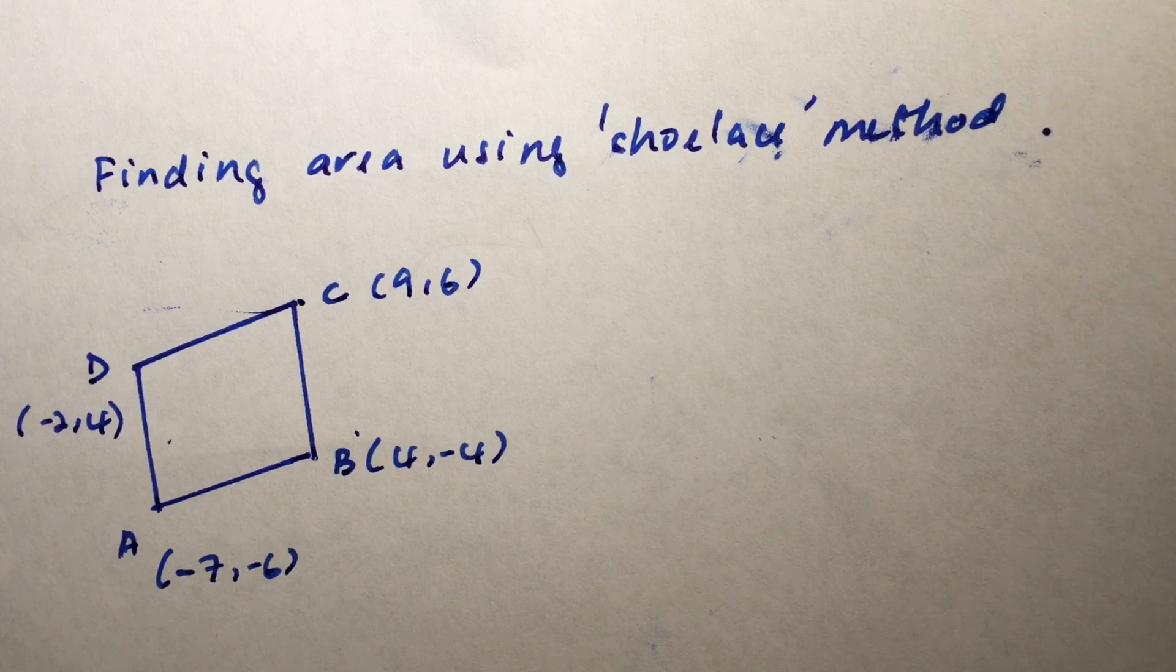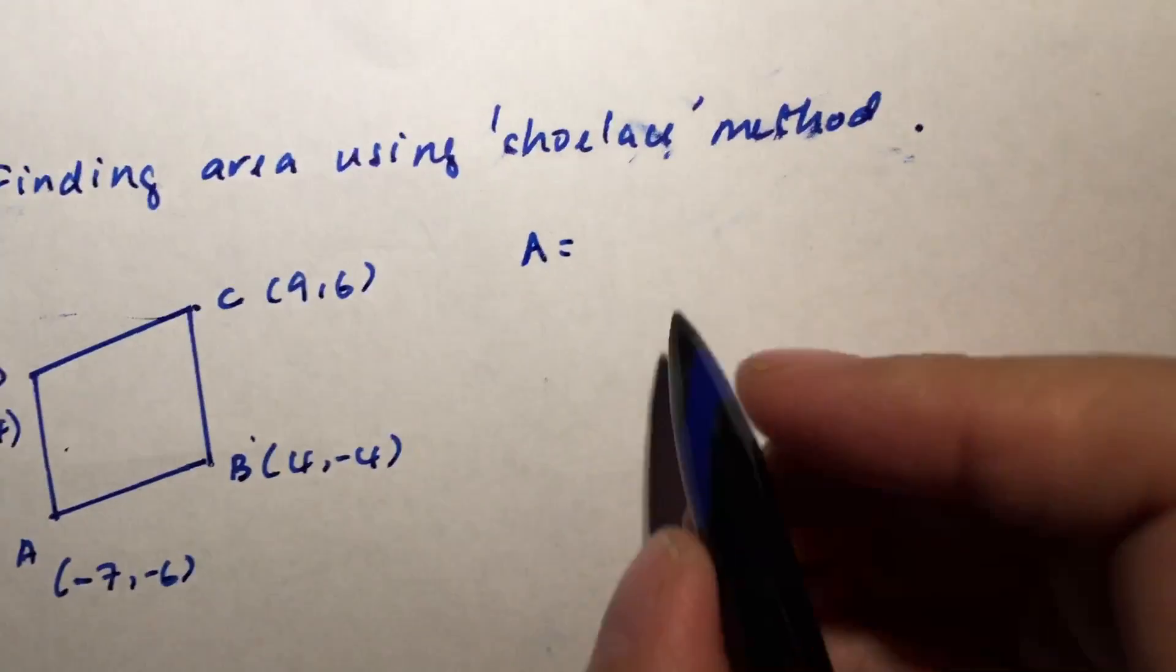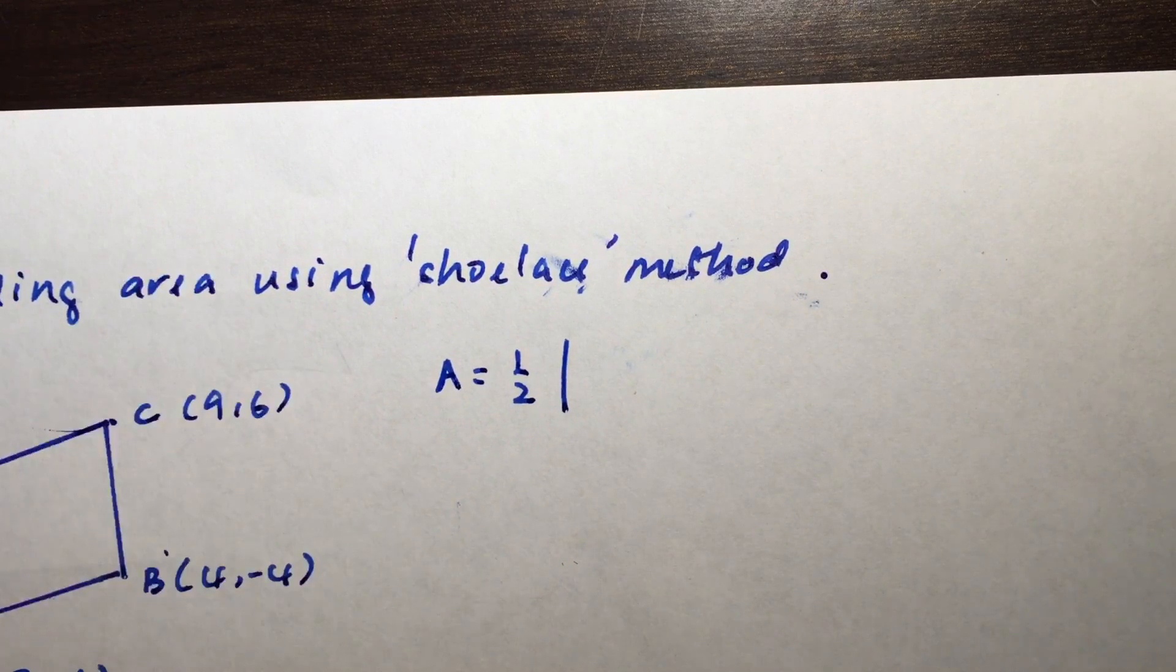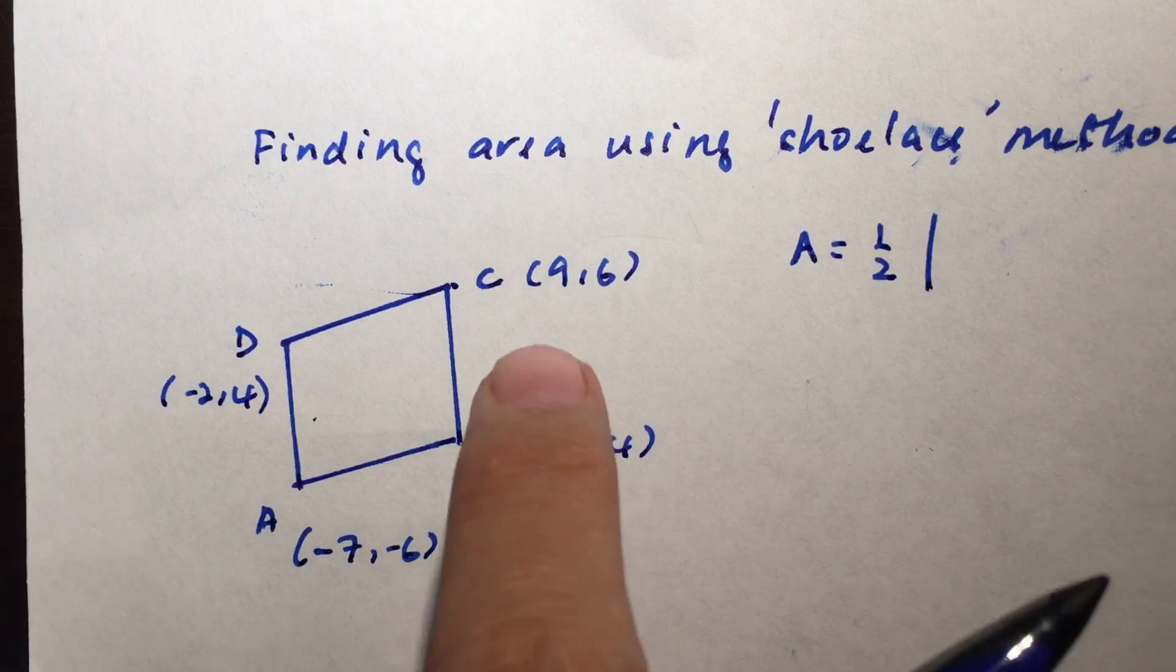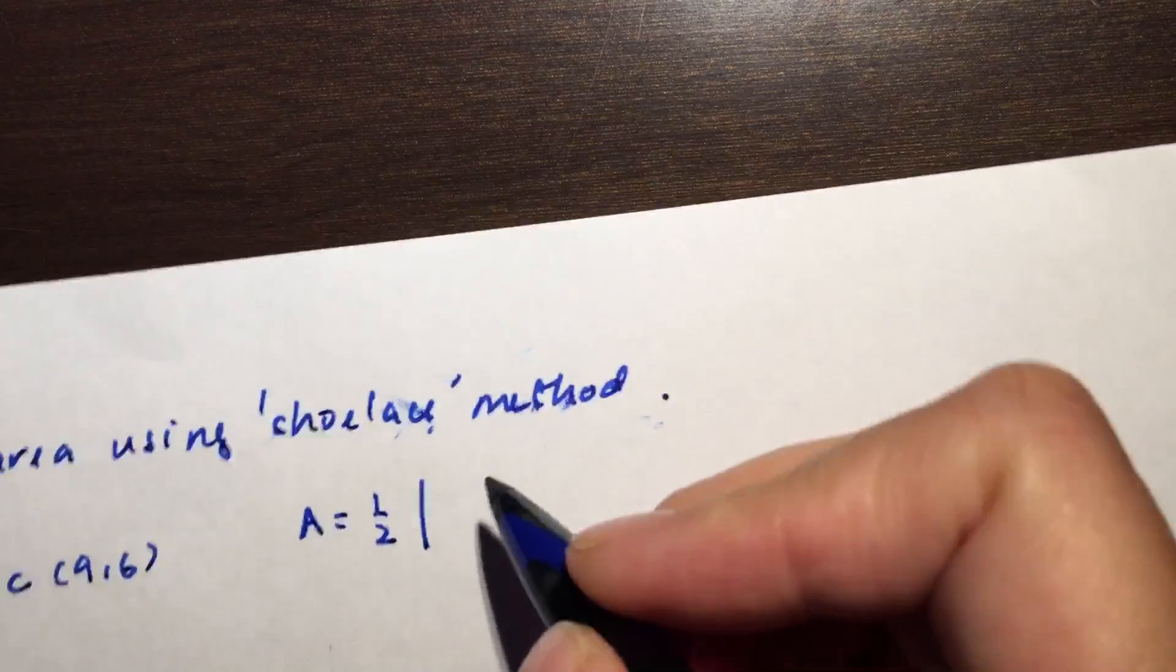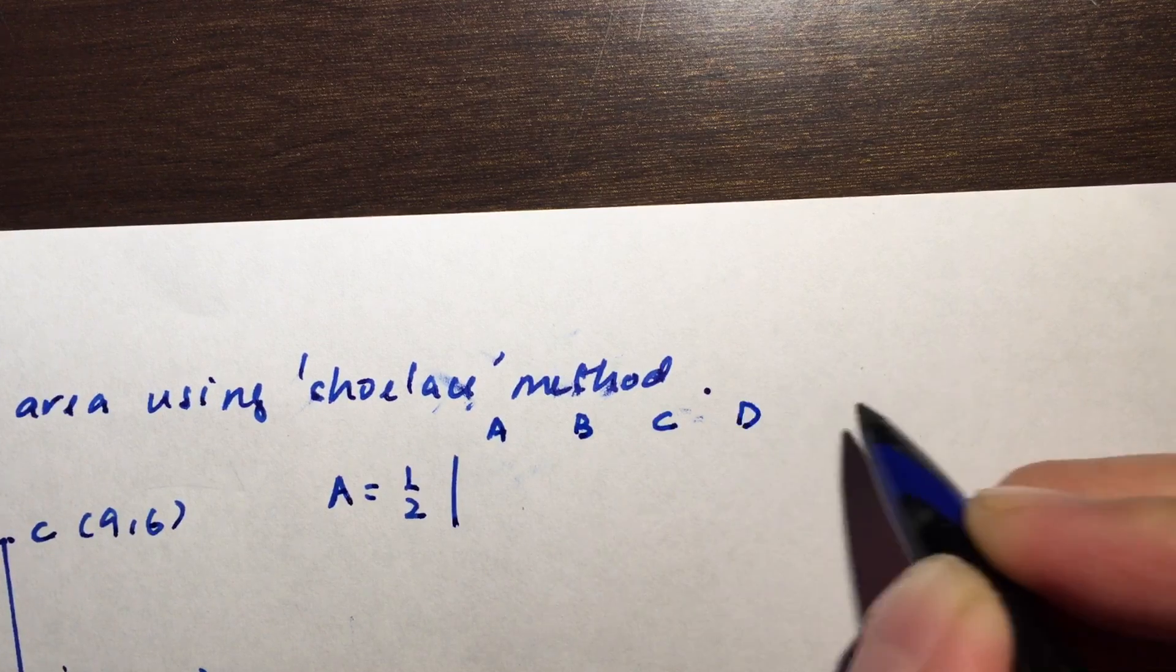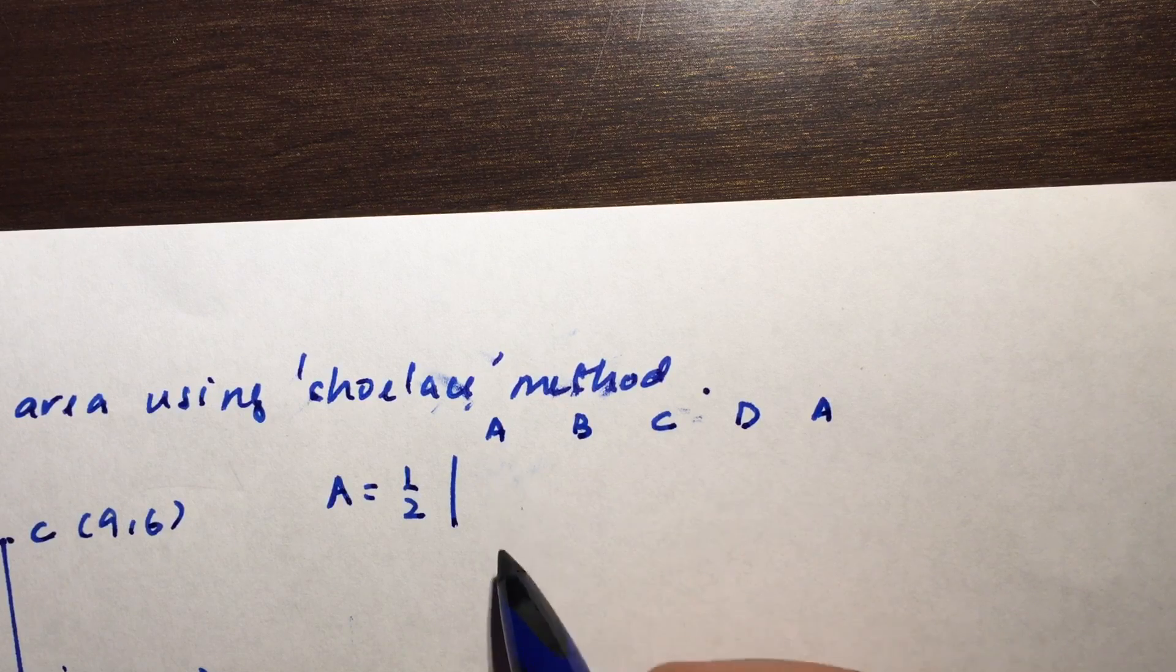What we will need to do is use the Shoelace formula. For any area, you're gonna have half, and we're going to line up all the coordinates that we're going to use and close it up. In this case I'm going to start with A to B to C to D and back to A again. I'm going to write this at the top to help us remember: A, B, C, D, and back to A again, and we're going to write the coordinates in this form.